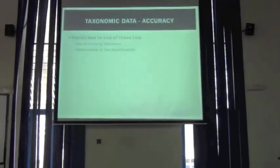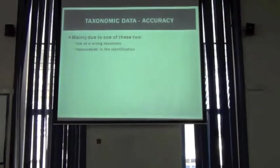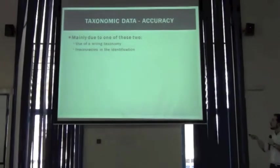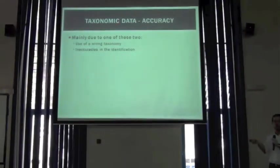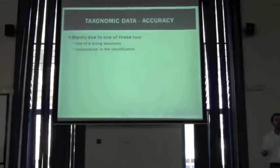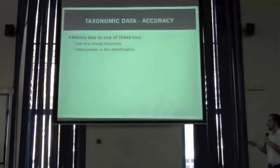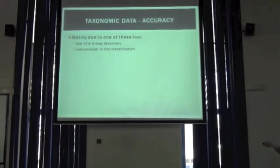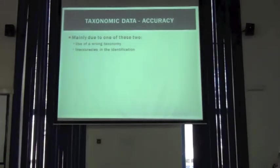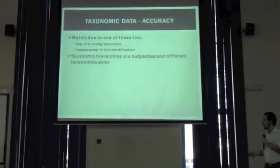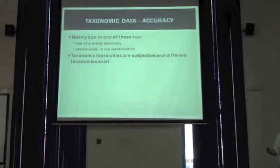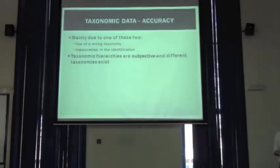Taxonomic data accuracy, or lack of accuracy, may be due to one of these two cases: the use of a wrong taxonomy, or inaccuracies when identifying the species and applying the taxonomic data. We will speak further about wrong taxonomies in another section of this workshop, the taxonomic assessments. But a couple of ideas: taxonomies are subjective because they depend on the point of view of expert taxonomists, and thus there are different taxonomies.